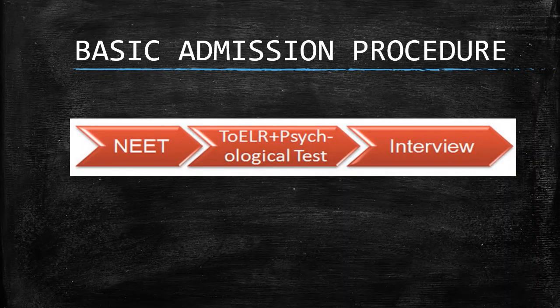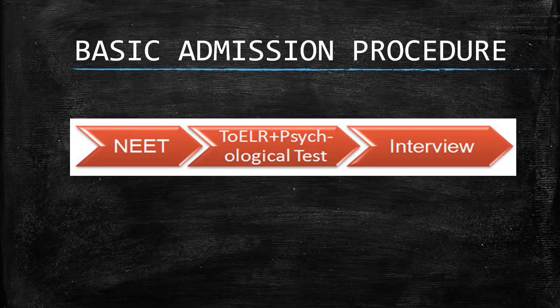The basic admission procedure is: first, you are required to give the NEET 2020 exam, after which a cutoff comes. That cutoff is usually around 7500 rank for boys and goes higher for girls. The marks differ every year. Those who have applied for AFMC are selected and called to AFMC for the TOE LR and psychological test. After the psychological test, there is an interview, from which 150 cadets are shortlisted.